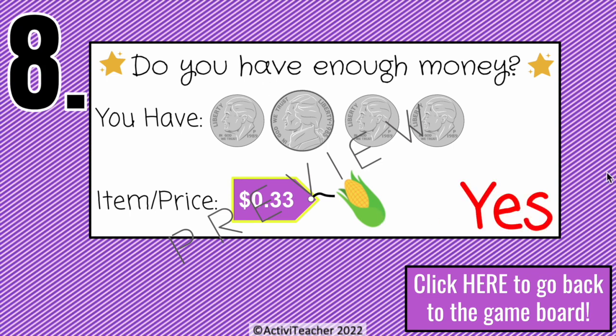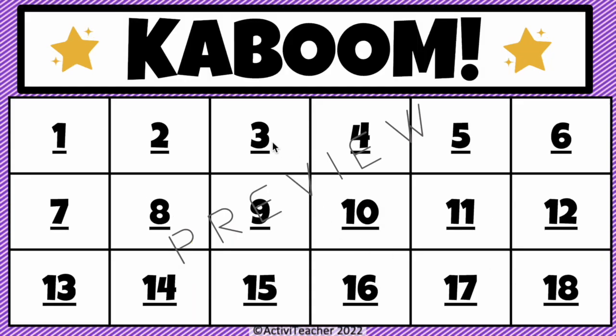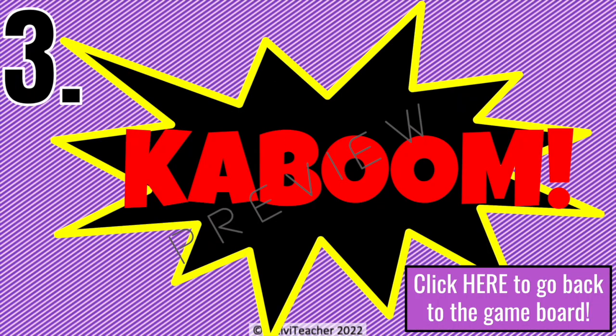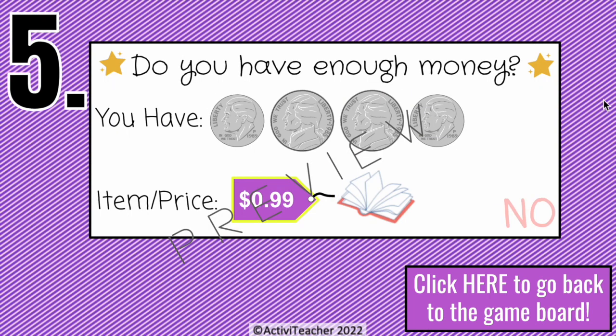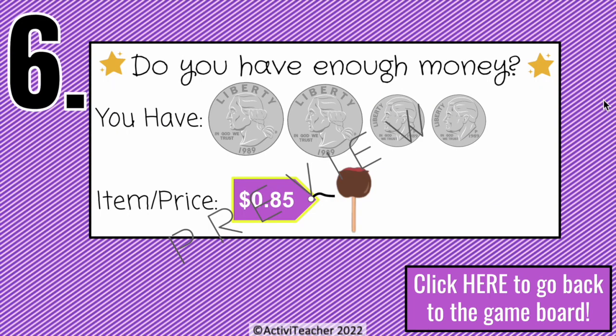The answer is yes — they do have enough money. Then the next team picks number three and gets a Kaboom, so they lose their turn. I'll flip through the slides so you can see all of the questions and levels.